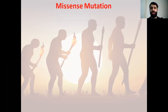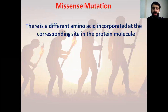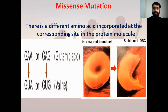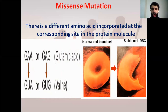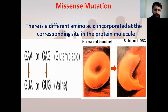Miss-sense mutation: a different amino acid will be incorporated at the site of this mutation. For example, the change from normal red blood cells to sickle-shaped cells occurs when we have a change in one of the amino acids — a change from glutamic acid to valine, as shown here, where A is substituted.